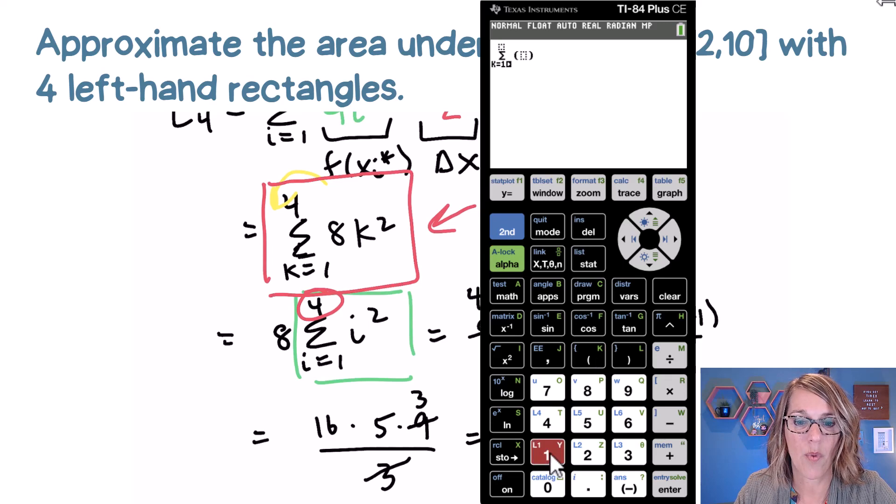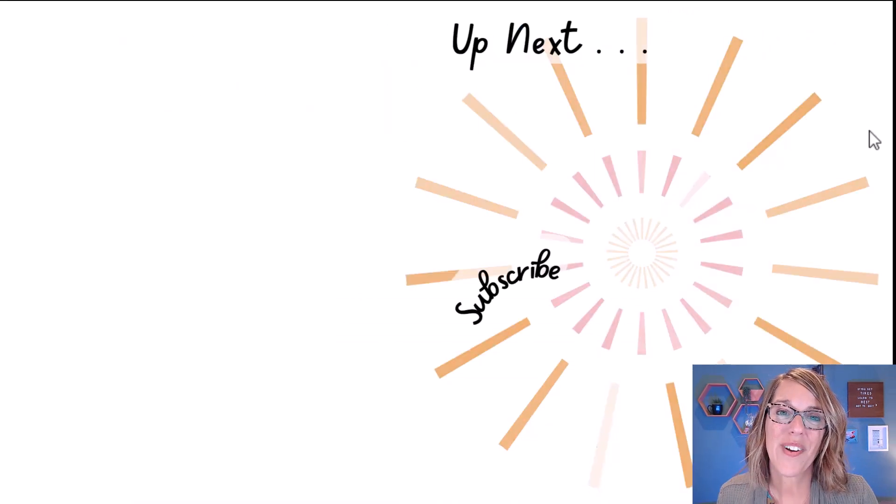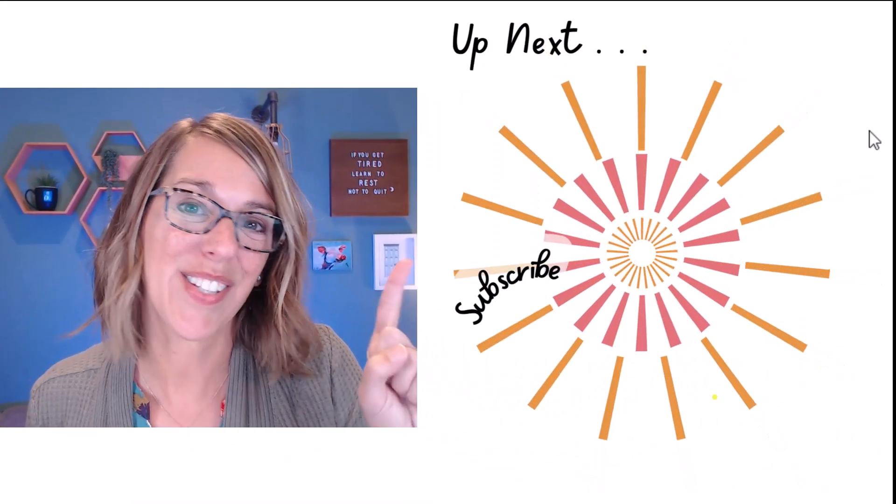So I've got k goes from one arrow over to four. And then inside those parentheses, we want our eight i squared or eight k squared. So eight alpha k, and I'm going to go ahead and hit my squared key, eight k squared. And then we can hit enter. And we've got that same answer of 240. You are doing fantastic. Take a look at this video next.